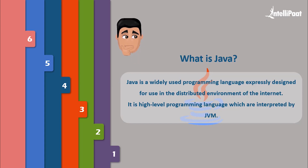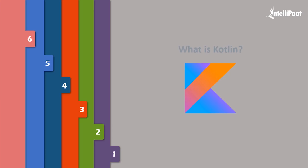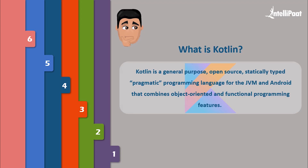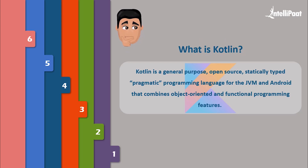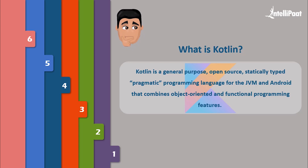Now let us discuss about Kotlin. Kotlin was developed in 2011 by programmers of a software development company called JetBrains in Russia, and was then augmented by several open source developers. Kotlin gives developers the features they asked for. It is a general purpose, open source, statically typed, pragmatic programming language for the JVM and Android that combines object-oriented and functional programming features.